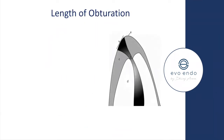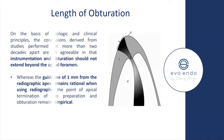Length of obturation — this was my Master's thesis topic: working length determination. We fundamentally know that instrumentation and obturation should not extend beyond the apical foramen. When I was taught endodontics back in 2002, apex locators weren't routinely used, so we were told to aim for one millimeter short of the radiographic apex.